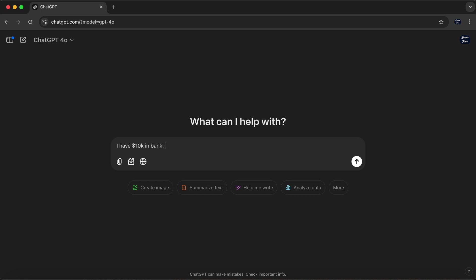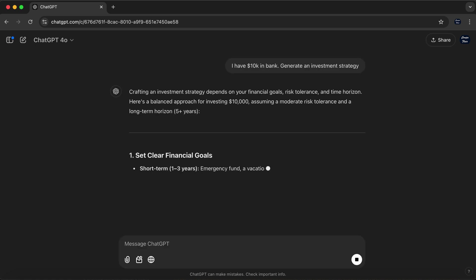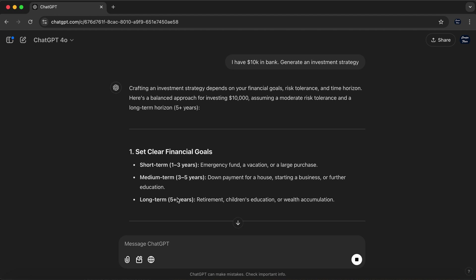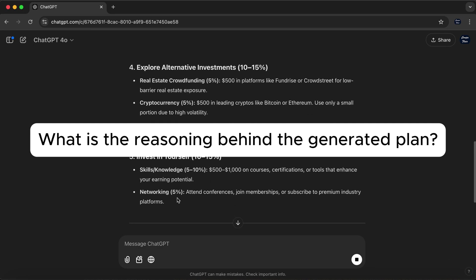Imagine you're asking ChatGPT for an investment strategy. It generates a detailed plan, but you can't tell if it's based on sound reasoning or just guesswork. Would you trust it with your money? Such examples highlight the importance of addressing the black box problem in AI systems.